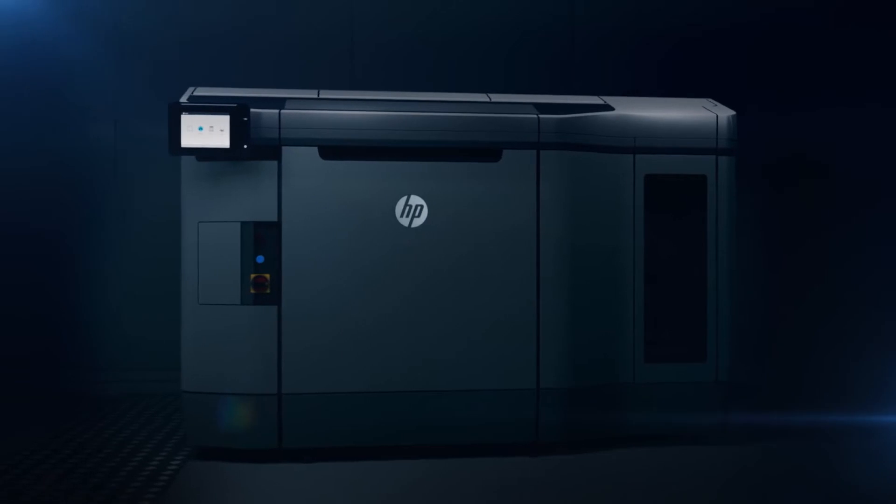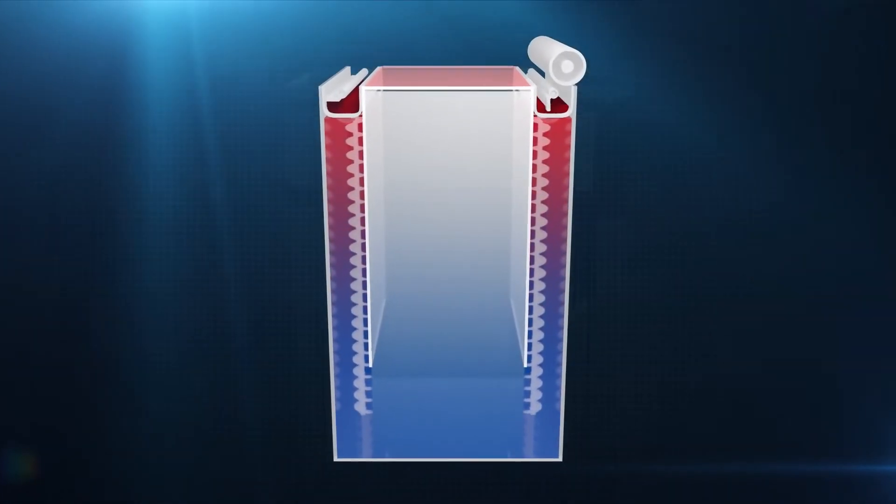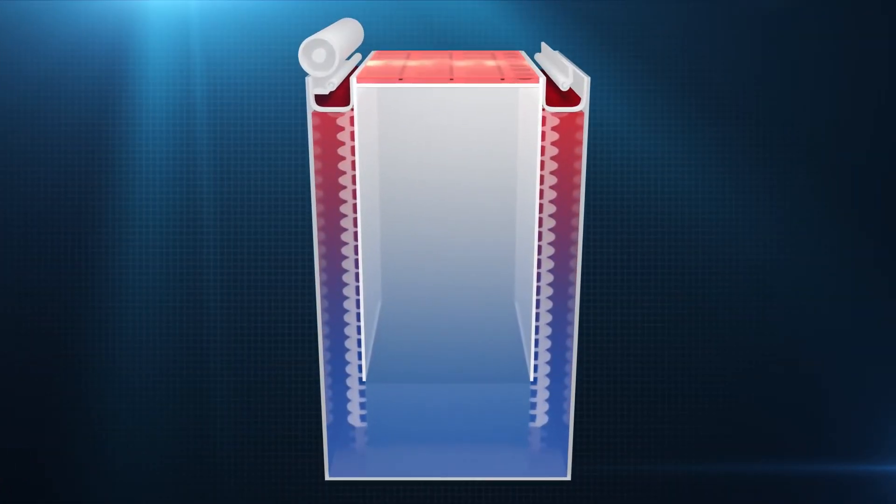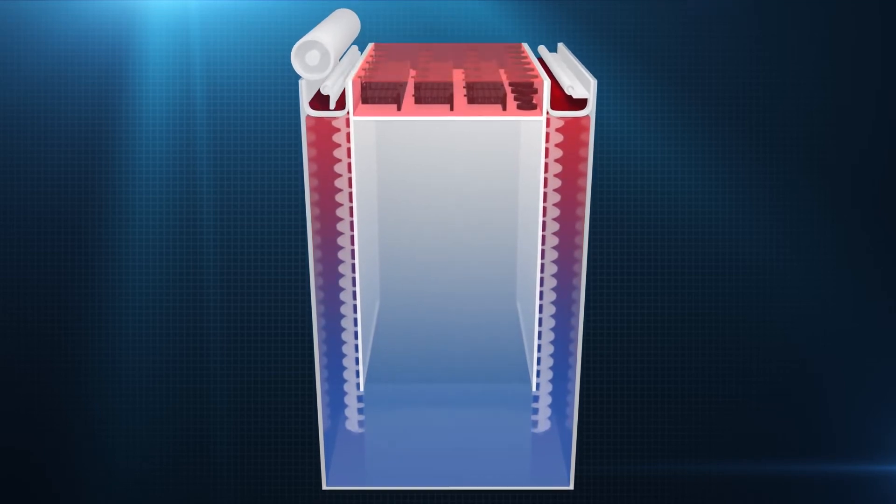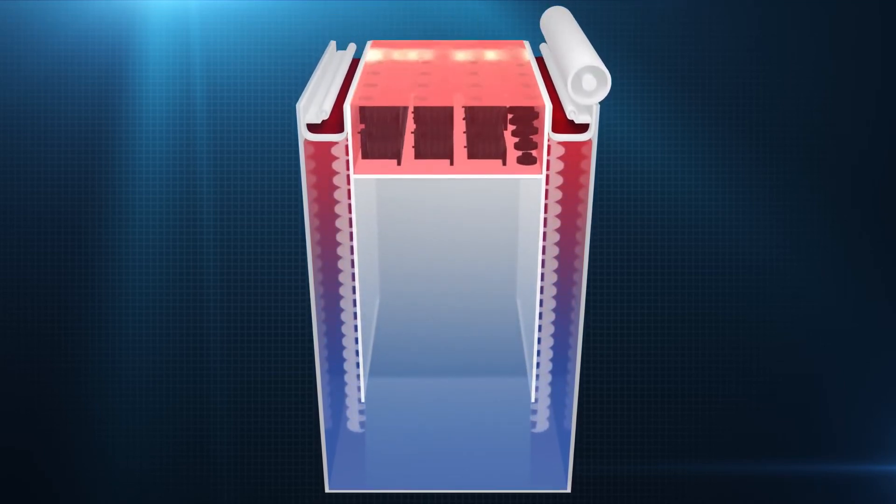The material is contained within the HP JetFusion 3D build unit at all times, meaning the printer can easily switch between a range of different materials. The material is raised from inside the build unit and spread evenly across the build platform, where the fusing process occurs.